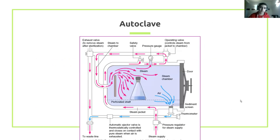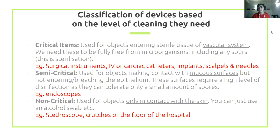An autoclave uses steam to sterilize. In your own time, get a grasp of its basic mechanism — you don't need to know every detail. Items are classified into three subcategories based on how critical sterilization is. This is high-yield content. Critical items breach a sterile environment in the body — things like scalpels that contact the bloodstream — and must be fully sterilized.